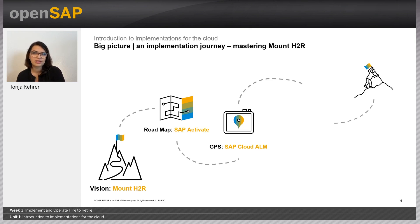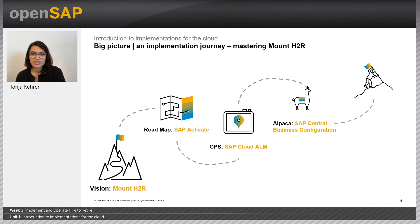However, a journey up the mountain can get long and tedious, and productivity may decline. To react, we bring in an expert for steep ground — an alpaca. The alpaca of implementation projects is SAP Central Business Configuration. The solution is designed to manage all configuration activities centrally from one point for all solutions. It also allows for go-lives in smaller, iterative steps that help you see results faster and keep productivity high. Now let's take a closer look at SAP Activate.